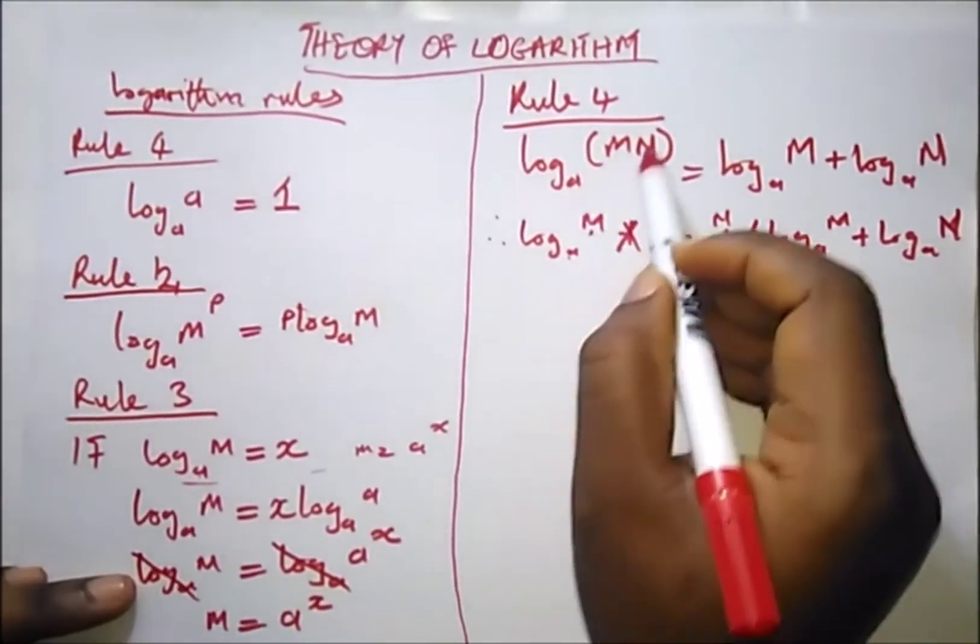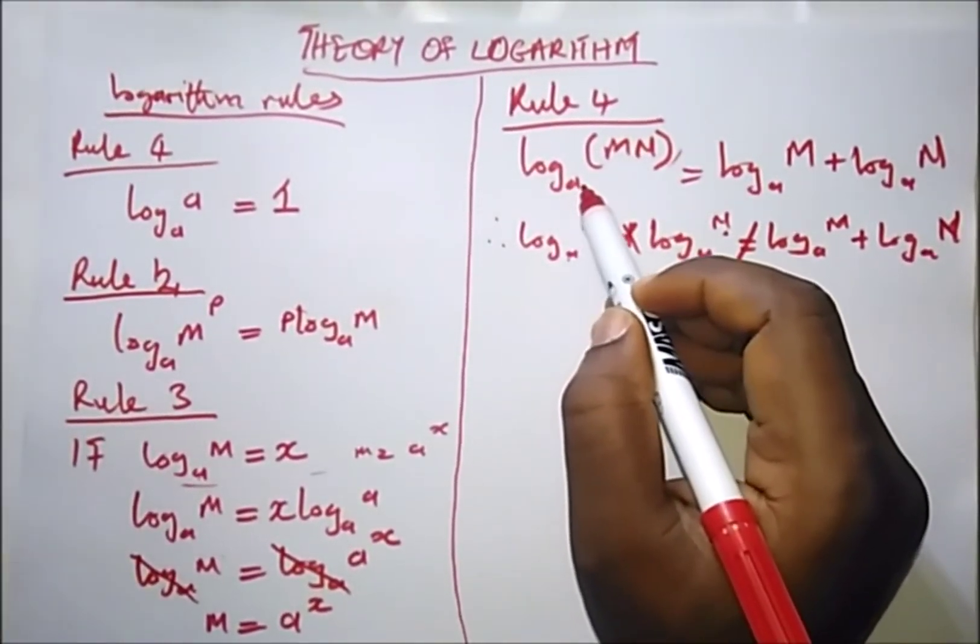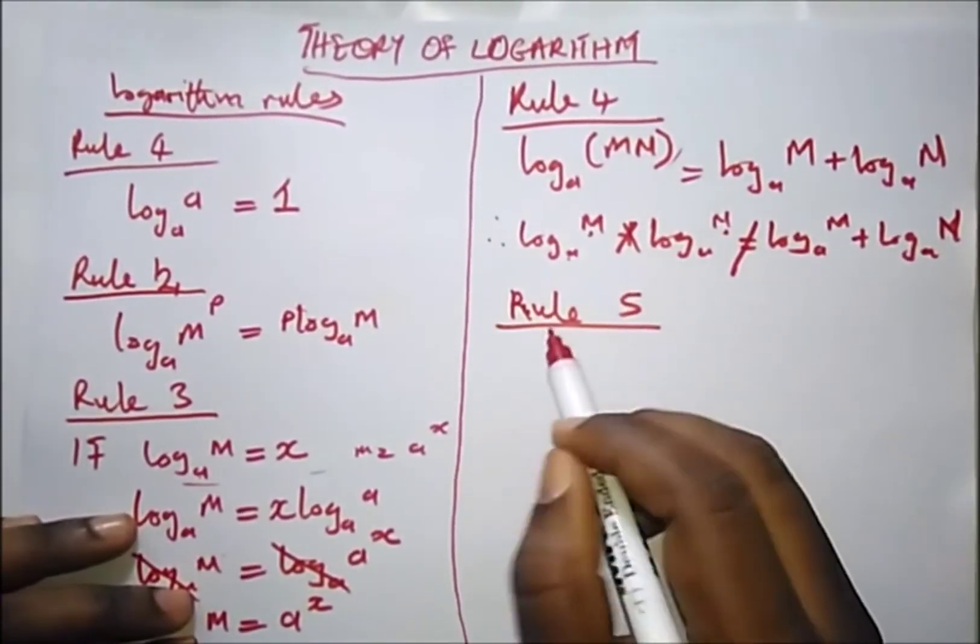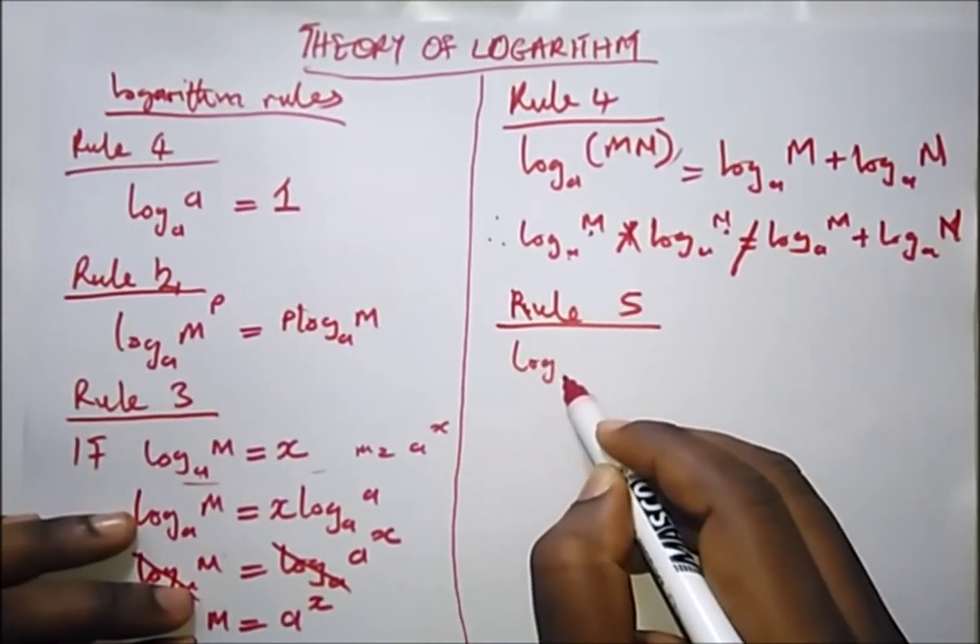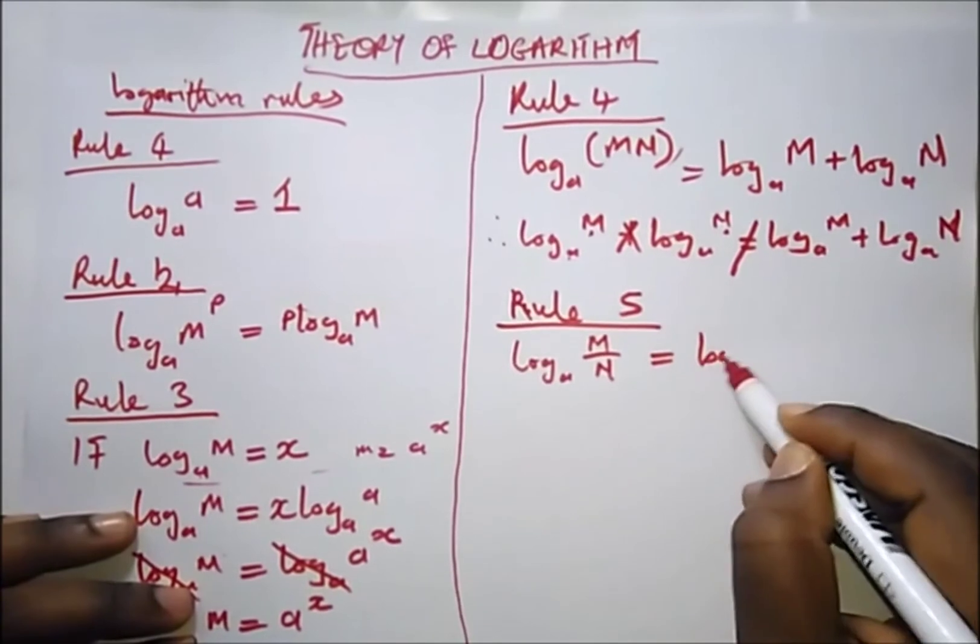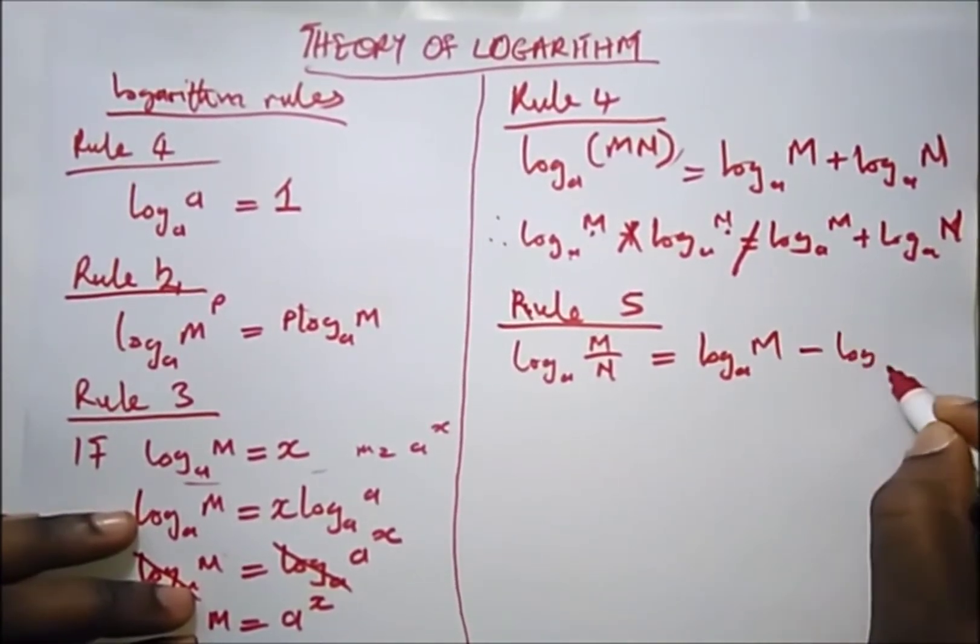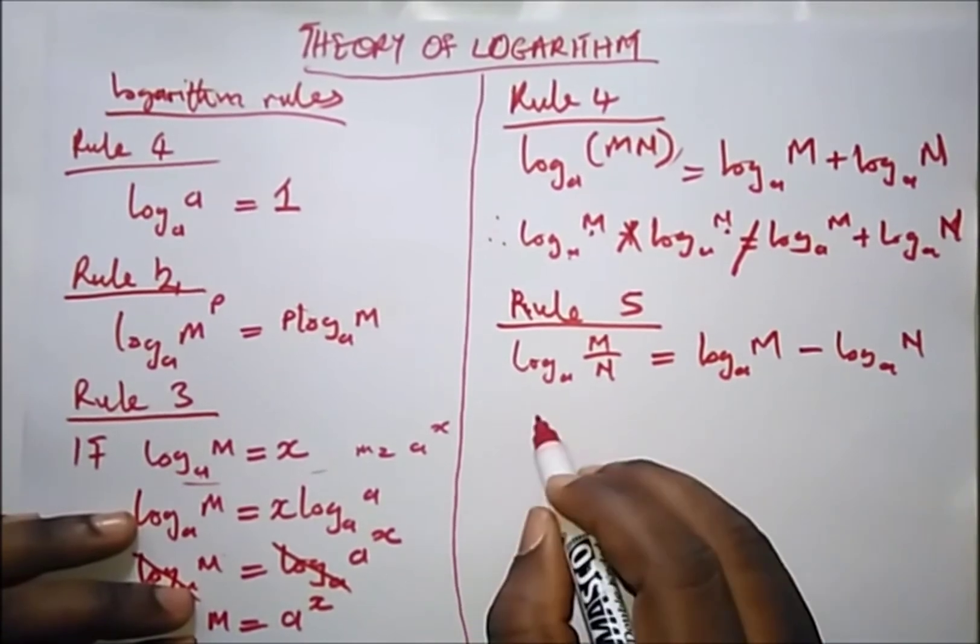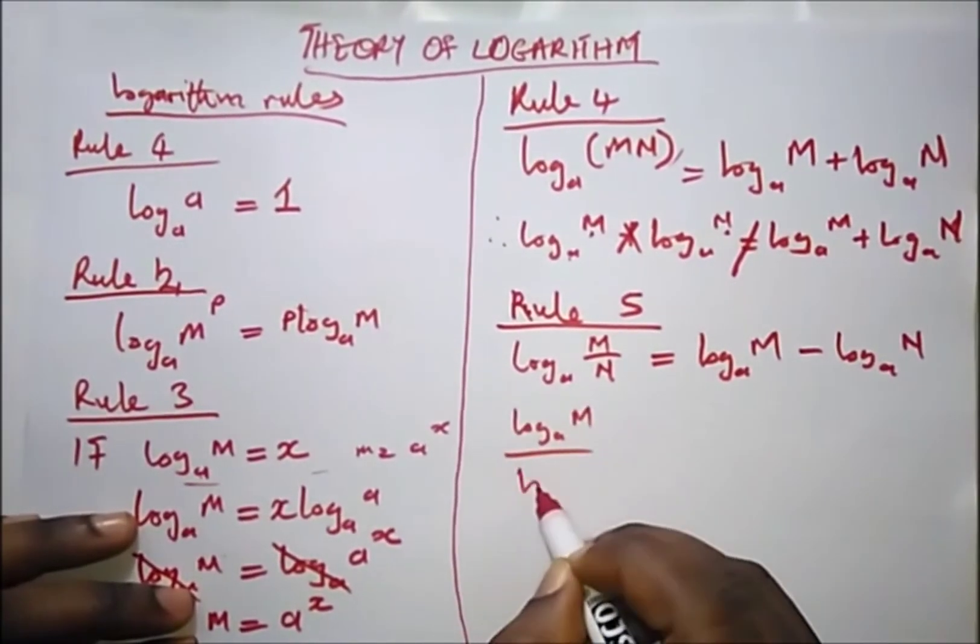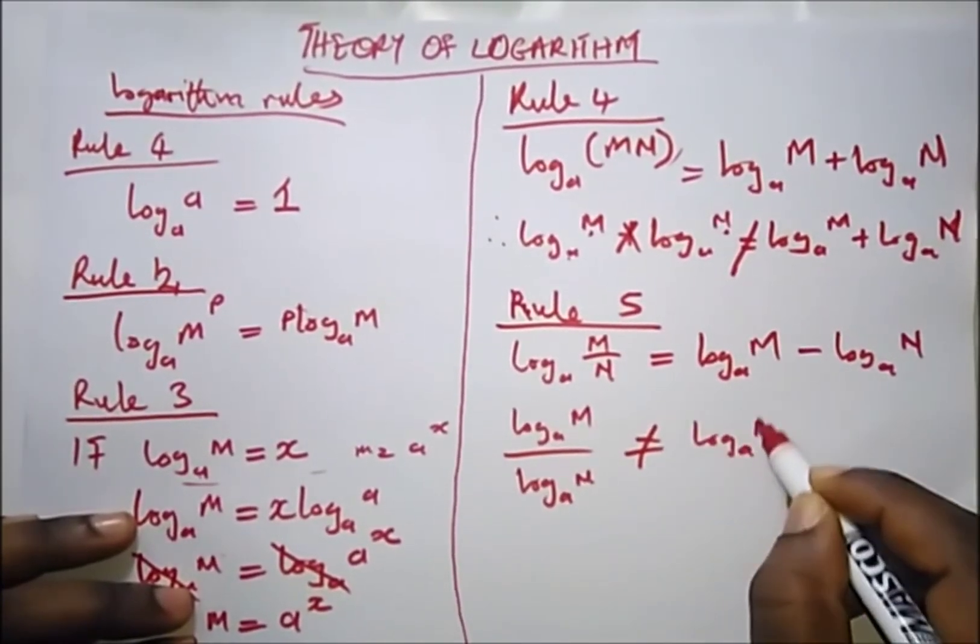We have rule number five, which is the division rule. When you have log base a of (m over n), it is equal to log base a of m minus log base a of n. And remember it can never be log base a of m over log base a of n. Please, please, let's take note of this.